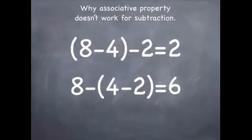So why are these two problems different? Well, because of the order of operations. We have to solve what was in the parentheses first on both of these expressions before doing anything else. And that's why associative property does not work for subtraction.